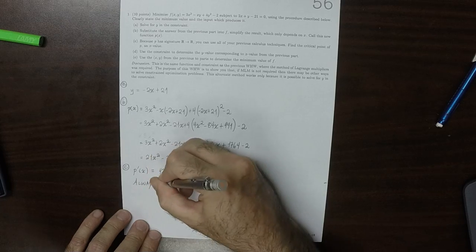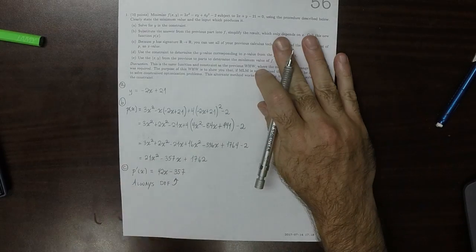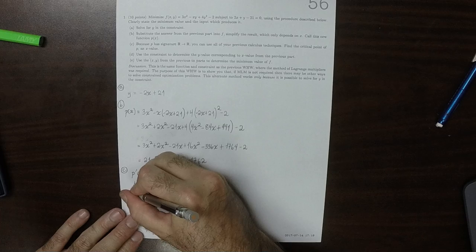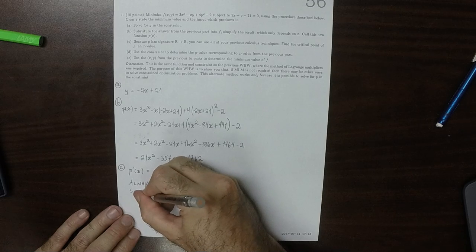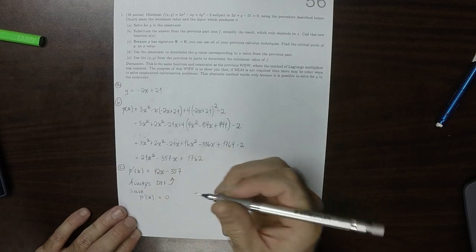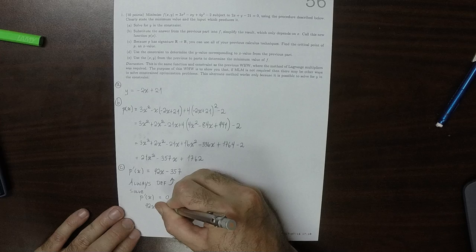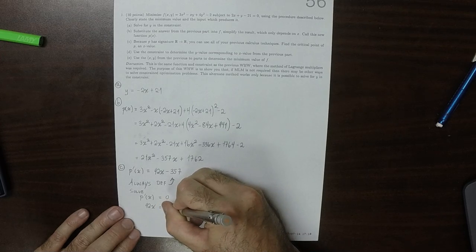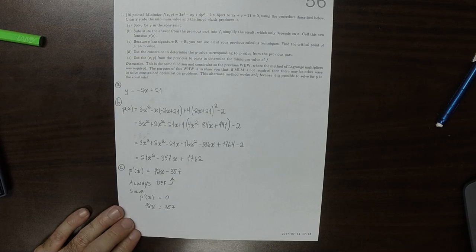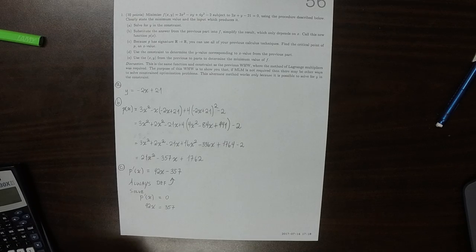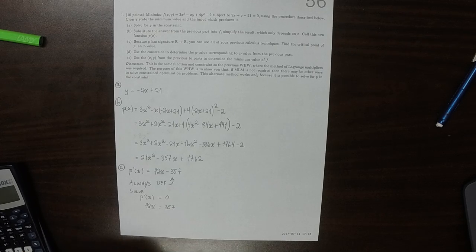This is always defined. So the only kind of critical point that we'll find is when the derivative is 0. So that derivative equals 0. So we need to solve 42x is 357. Now, is that right? So 357 over 42, that's 8 and a half.